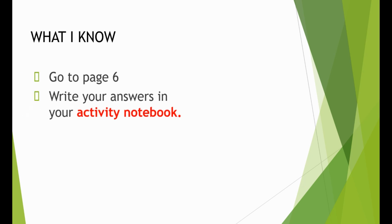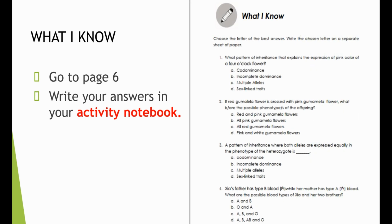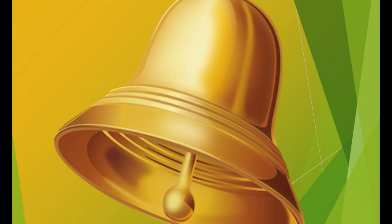Before we go on, let's find out what you know about the topic. Go to page 6 of your module and choose the letter of the best answer. Write the chosen letter in your activity notebook. For example, number 1: what pattern of inheritance explains the expression of the pink color of a 4 o'clock flower? Is it A, Co-Dominance; B, Incomplete Dominance; C, Multiple Alleles; or D, Sex-Linked Traits? The correct answer is letter B, Incomplete Dominance. Are you ready to answer the rest? Let's go!